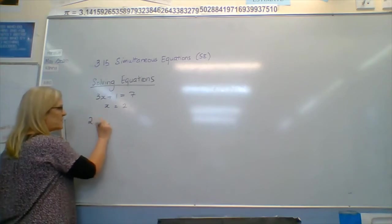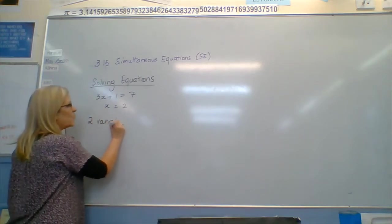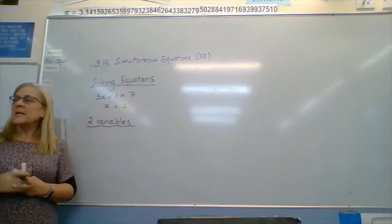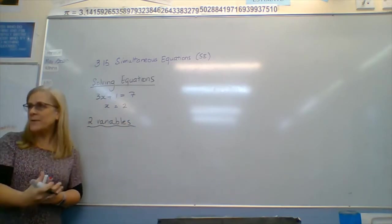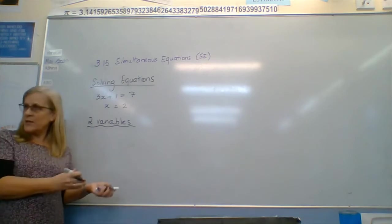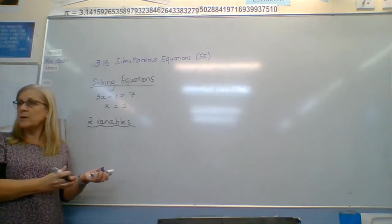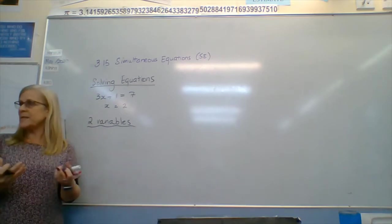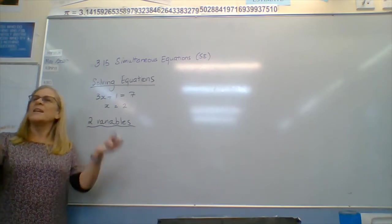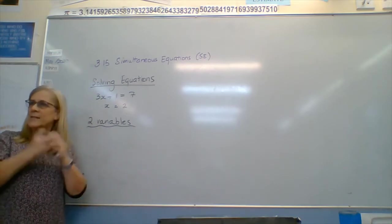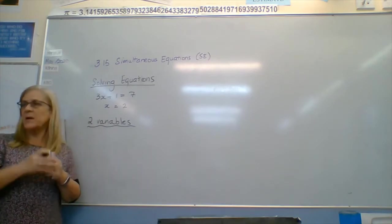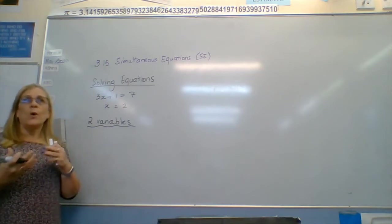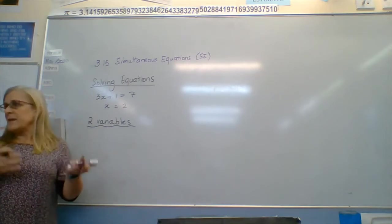If we've got two variables, then we need two pieces of information. We either need to know what one of them is and an equation to put that into, or we need to know two pieces of information that we can solve simultaneously at the same time. Use both of them to help us to find the answers.